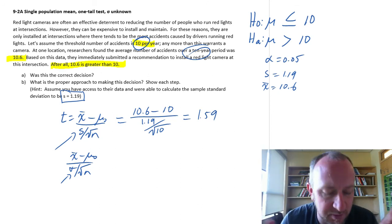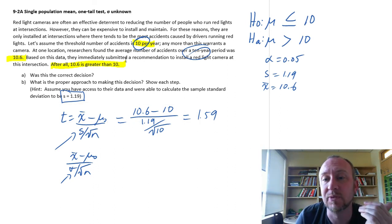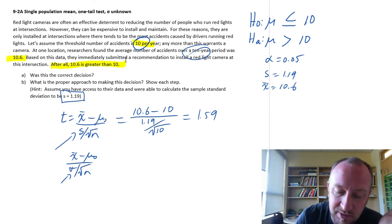Now we can go and use the p-value approach or critical value approach. So let's go to our tables and look up this value. Oh, but before we do, we need to know what t-distribution are we working with.